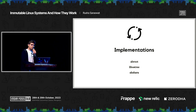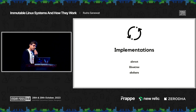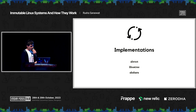Let us discuss some implementations of immutability on Linux used by some of the prominent immutable distributions out there. I will not be discussing NixOS in this session, as even though it is quite a popular immutable distribution, its main focus is reproducibility and therefore it is out of scope for this session. The first implementation I will be looking at is AB root, which is used by VanillaOS, PikaOS, and quite a few other distributions.